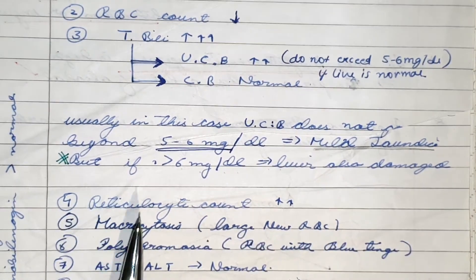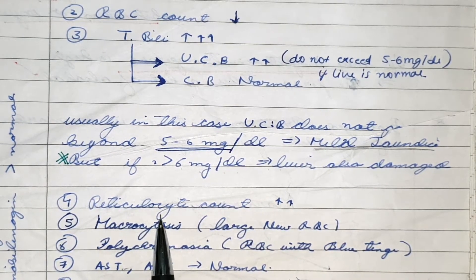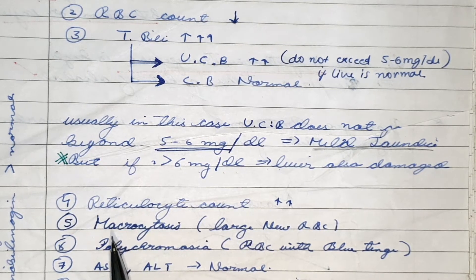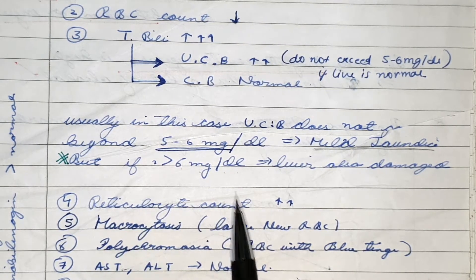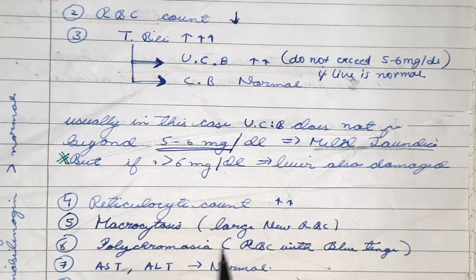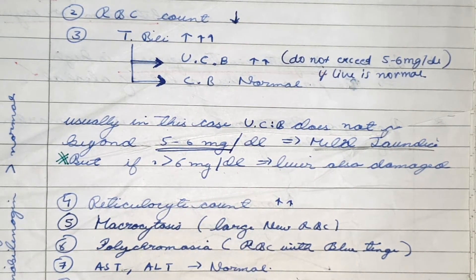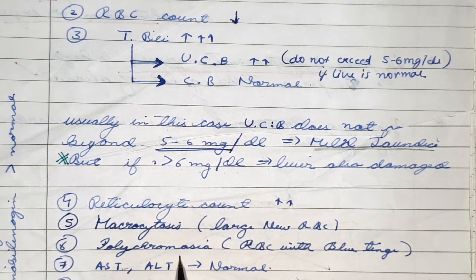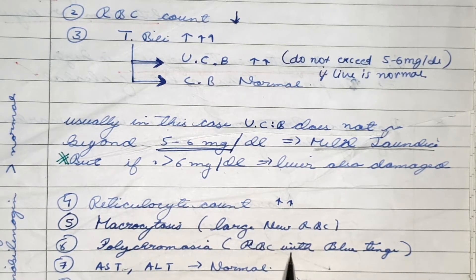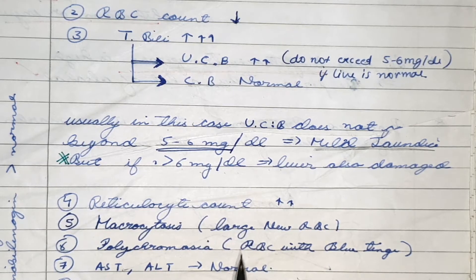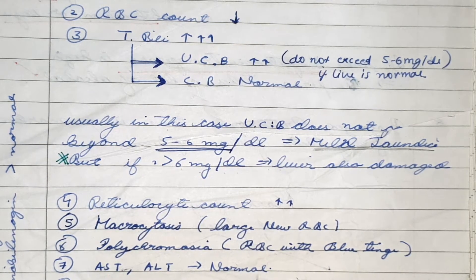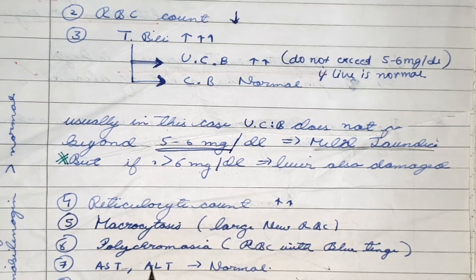Because of the decreased RBC count, more reticulocytes are produced in the bone marrow, so reticulocyte count is increased. There is macrocytosis — large new RBCs — because RBCs are transported into blood without full maturation. There is also polychromasia, meaning RBCs stain with a blue tinge because some RNA residues that stain blue are still present in the RBCs.